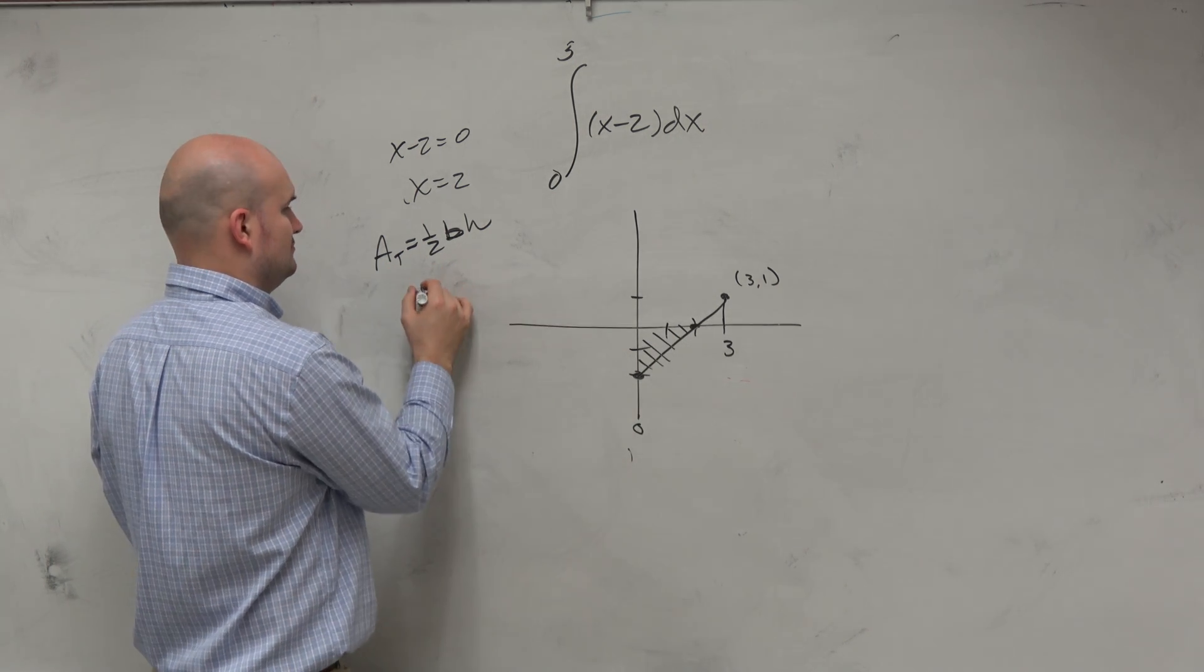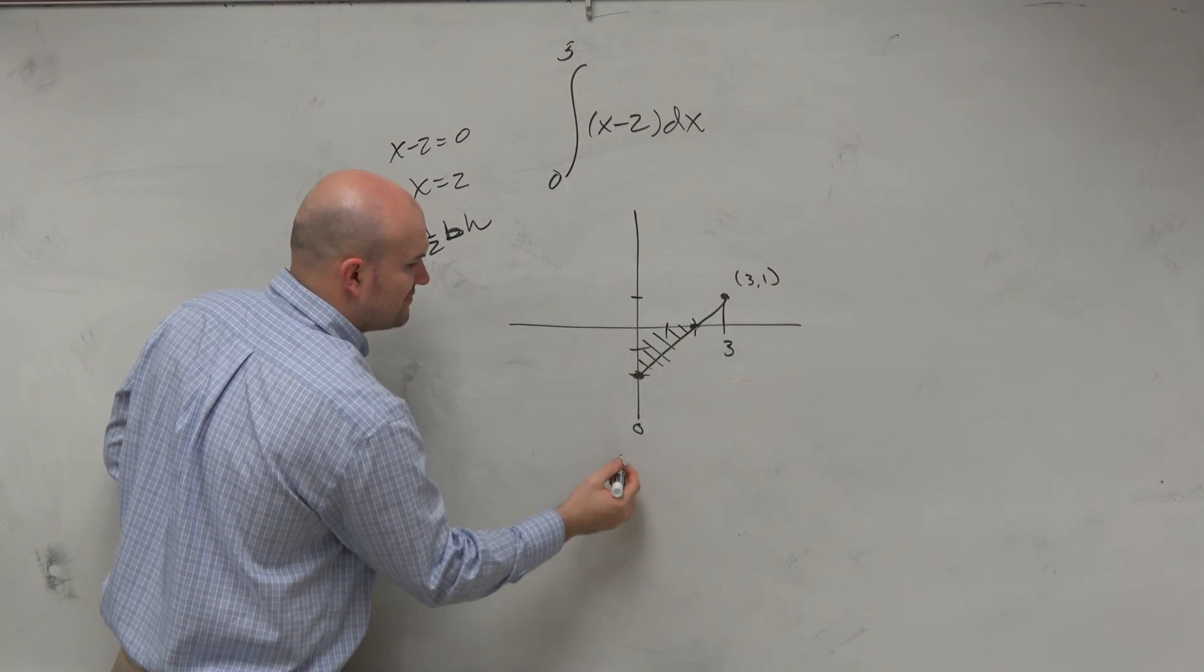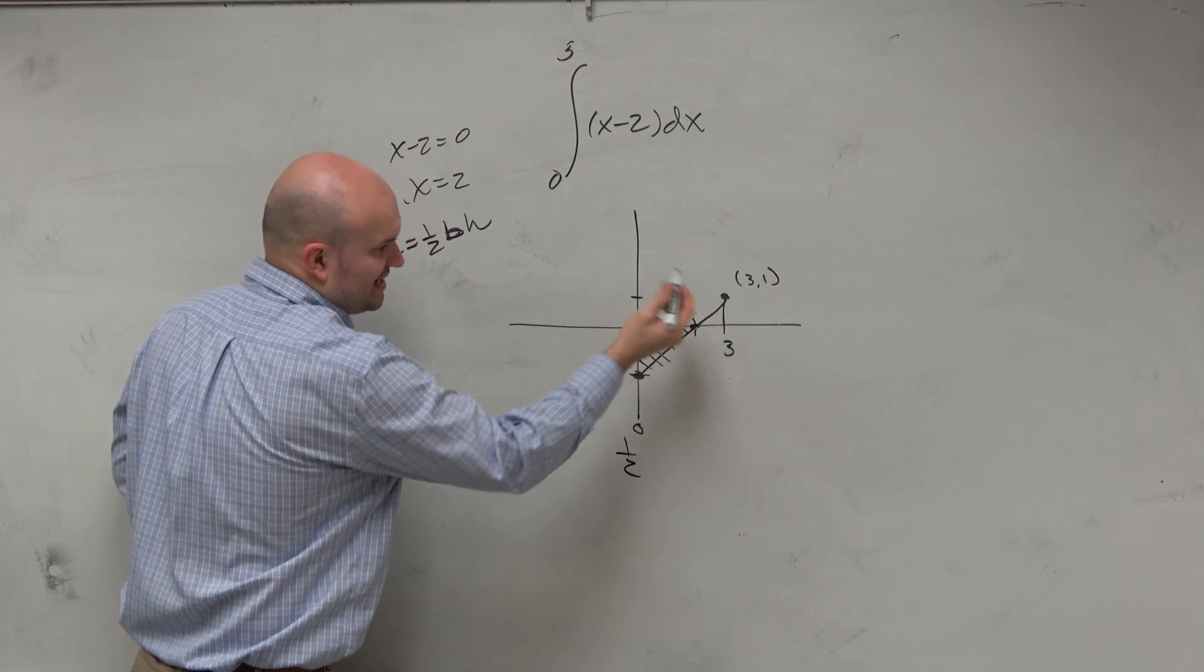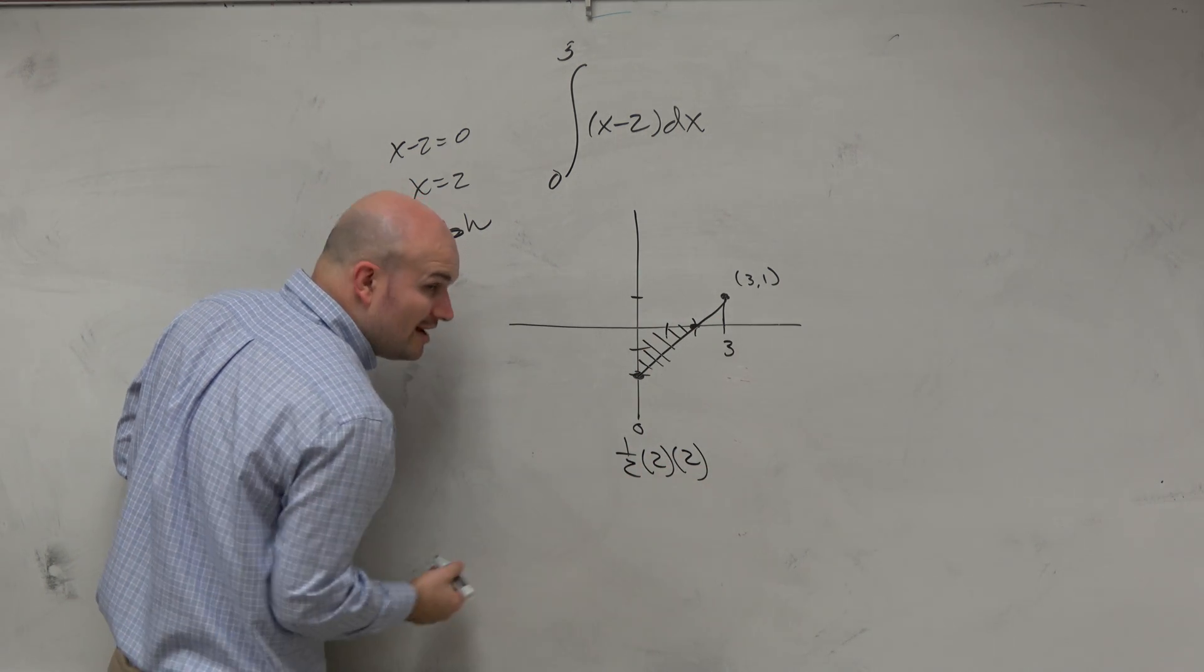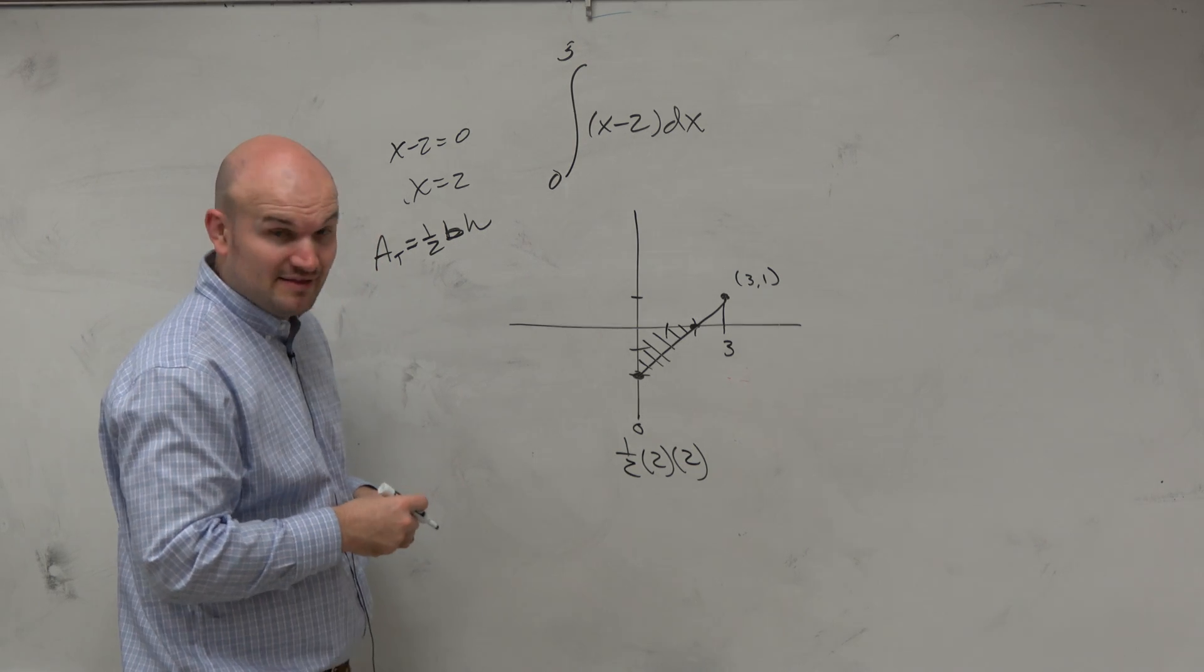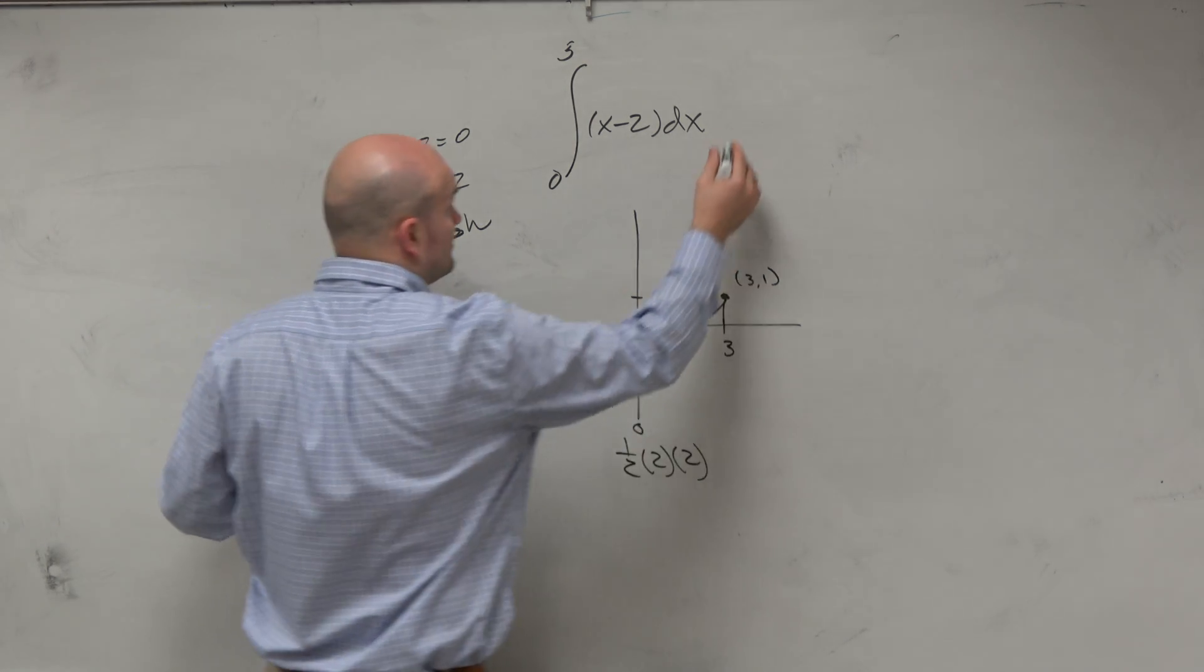So the area of this figure is going to be 1 half base, which would be times 2 times 2. However, visually, we understand this also to be negative.